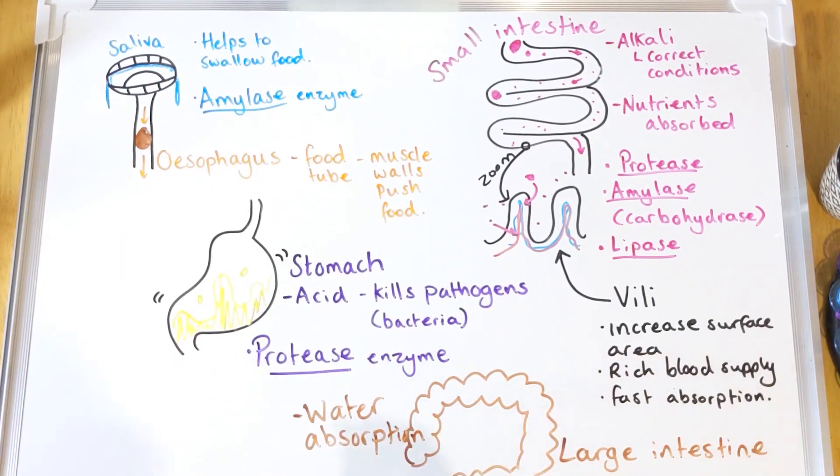What we're going to have a look at now are the parts that aren't involved in food directly - so the liver, the bile, the gallbladder, and the pancreas. They're a bit more complicated, so we're going to have a look at them in a little bit more detail now.